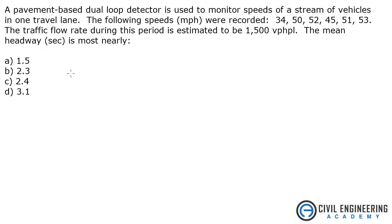A pavement based dual loop detector is used to monitor speeds of a stream of vehicles in one travel lane. The following speeds in miles per hour were recorded: 34, 50, 52, 45, 51, 53. The traffic flow rate during this period is estimated to be 1500 vehicles per hour per lane.